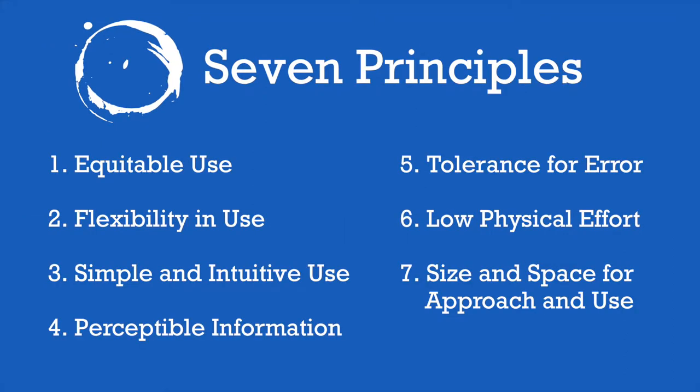The NDA, or National Disability Authority, offers seven principles that are core to Universal Design. These principles are equitable use, flexibility in use, simple and intuitive use, perceptible information, tolerance for error, low physical effort, and size and space for approach and use. We are going to go over these more in the following sections.